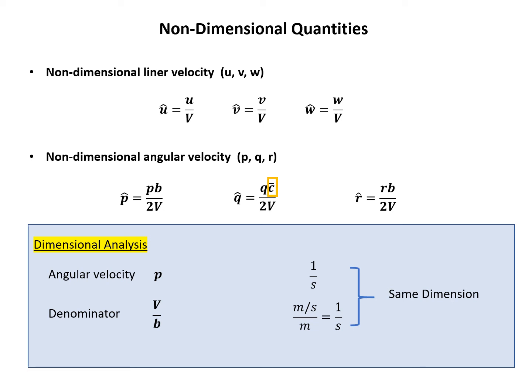Now the same question: why do we use c̄ for the non-dimensionalization of q, but b for p and r? The reason is the same as for the moment coefficients: q is the pitching angular rate, so we use c̄ because c̄ is along the longitudinal axis. But for p and r, which involve lateral-directional motion, we use b — the wingspan — as the characteristic length.